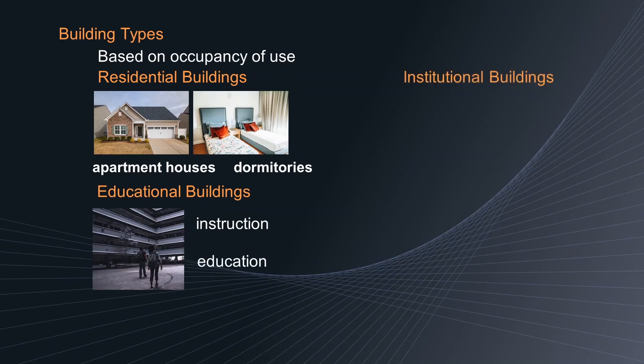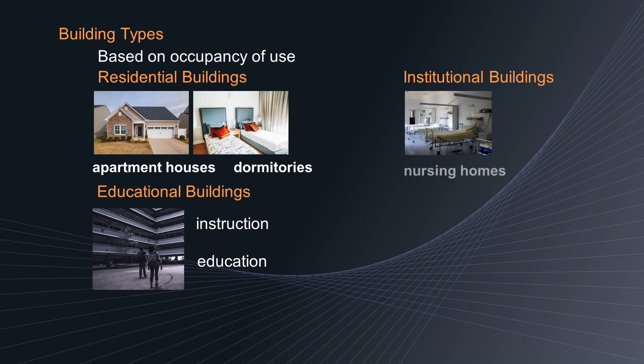Third, institutional buildings. Institutional buildings are building types which are constructed for providing medical treatment. Examples of these buildings include hospitals, nursing homes, orphanages, prisons, and mental hospitals.